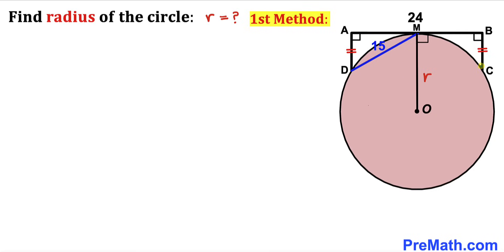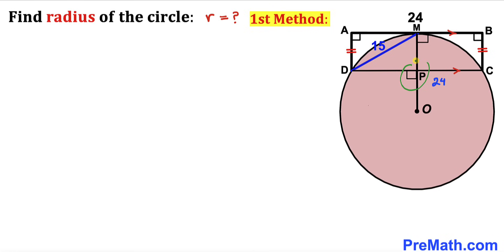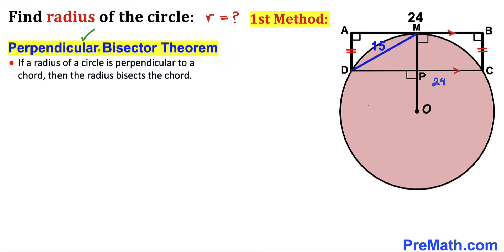Now let me connect points C and D. We can see rectangle ABCD, where tangent line AB is parallel to chord CD. Since side AD equals side BC, we conclude that AB length equals CD length. Since AB is 24 units, CD is 24 units as well. This angle is 90 degrees as well.